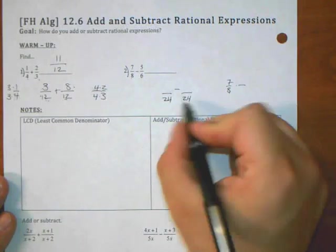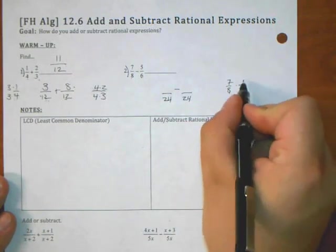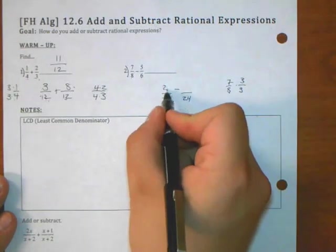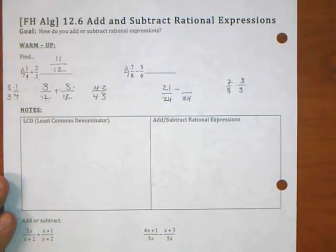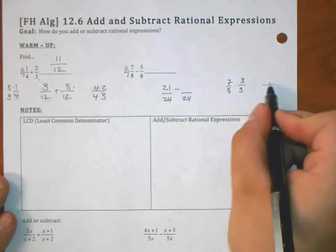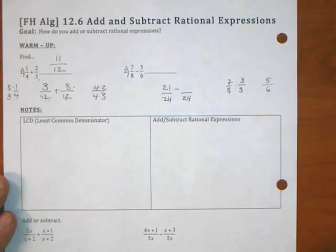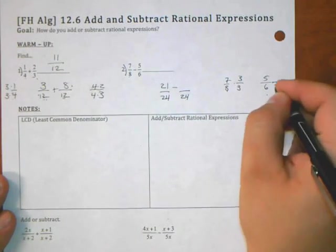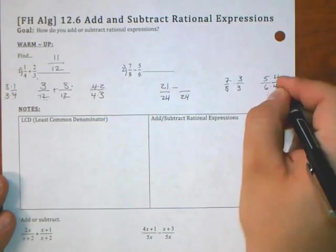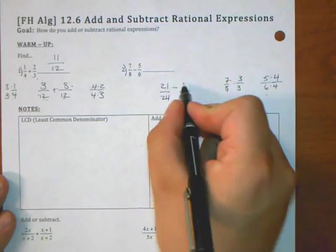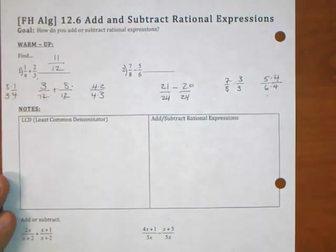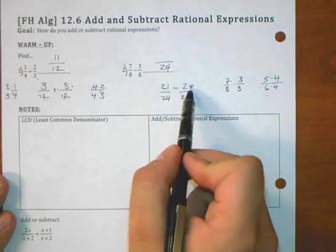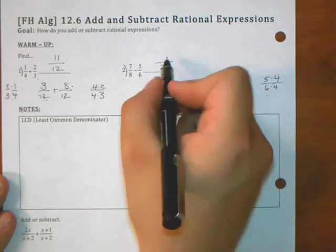And it's subtraction. So what times eight is twenty-four? Three. So then we multiply the top by three as well. Seven times three is twenty-one. What times six is twenty-four? Four. So we multiply the bottom by four, we multiply the top by four. So that's twenty. Now that they have the same denominator, our answer has that same denominator, and then we subtract. In this case, twenty-one minus twenty is one.